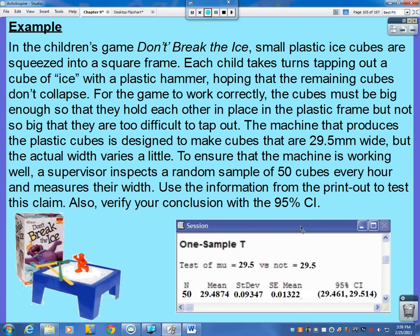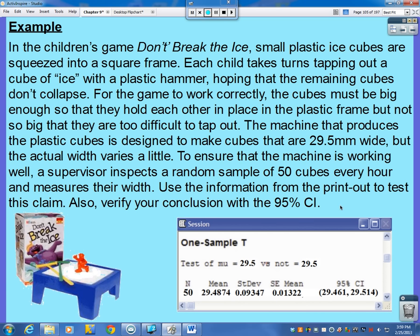So here is our computer printout. Now, here's our hypotheses right here. Mu is equal to 29.5 versus it is not equal to 29.5, because some of our cubes may be smaller or larger than what they should be. Here's our sample size of 50. Here is the sample mean that we got. Here is our sample standard deviation. Here is the standard error of the mean, which I will show you something which is kind of important with this number later. And here's our confidence interval.